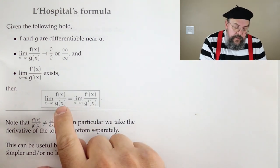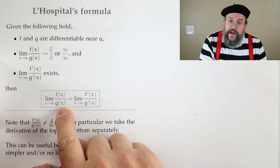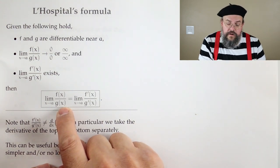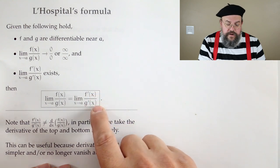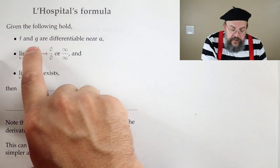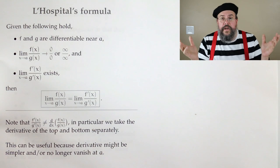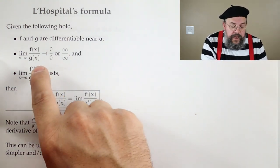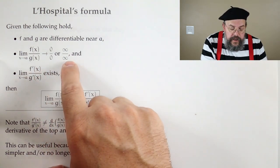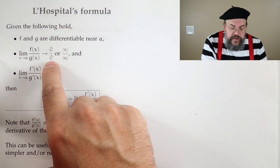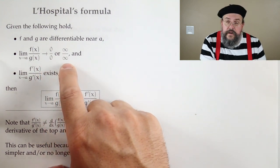So now we know the conclusion. It says, the function over function, if that goes to something like 0 over 0, or infinity over infinity. So what are the rules? They have to be things we can take derivatives of. Well, that's no surprise, because we're taking derivatives. It has to be indeterminate. So it has to go to 0 over 0, or infinity over infinity.